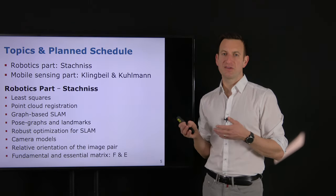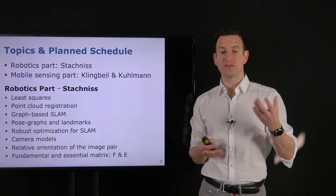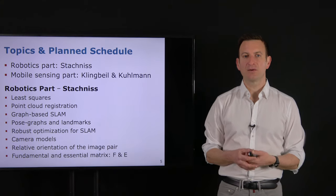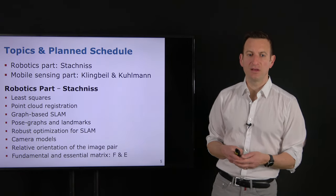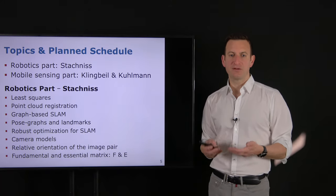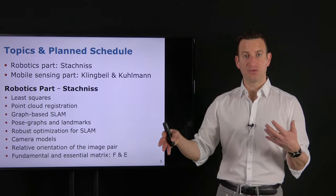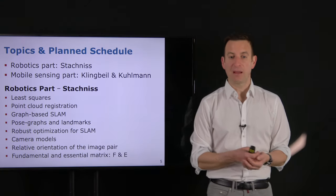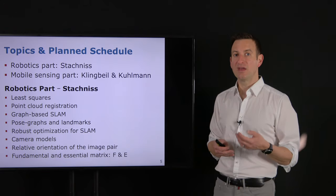We'll use point cloud registration as a building block inside a SLAM system, looking into graph-based SLAM starting with pose graphs — representations where the platform's pose is estimated at different points in time, with local map information registered to each other. We then use ICP or other techniques to build a graph of soft constraints, optimized using least squares to estimate where the platform is and what the world looks like. We'll also look into hierarchical approaches and landmark-based approaches, tightly coupled to bundle adjustment for cameras.